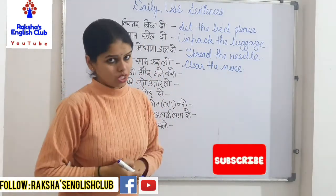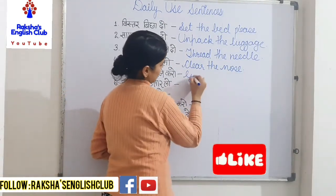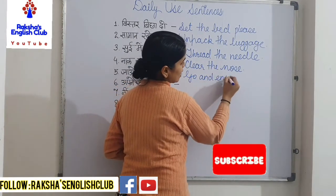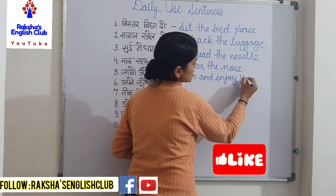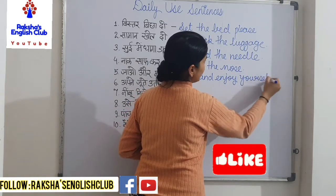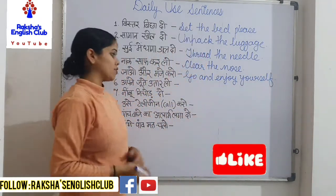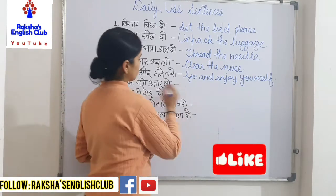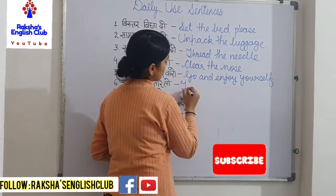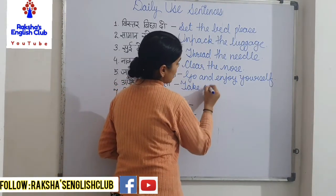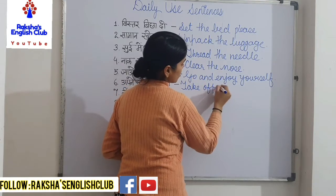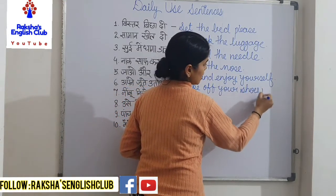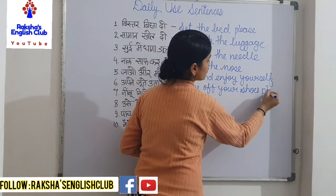Now, 'jao aur majhe karo' — go. We can say: 'Go and enjoy yourself.' Go and enjoy yourself. Then 'apne jute utar do' — for 'utar lo' we say 'take off': 'Take off your shoes, please.' Take off your shoes, please.